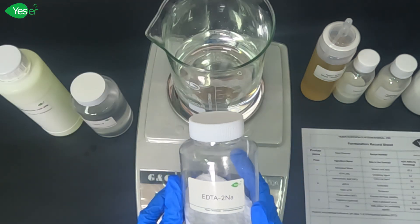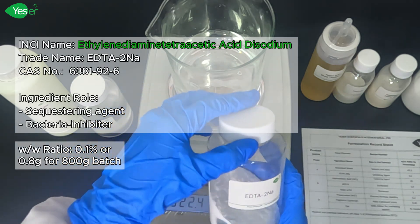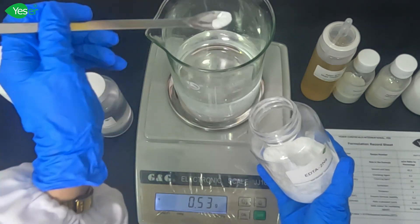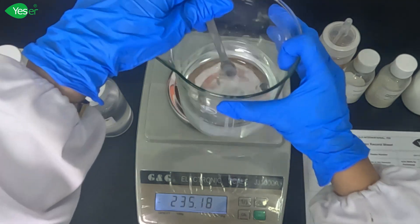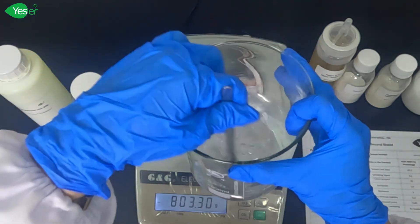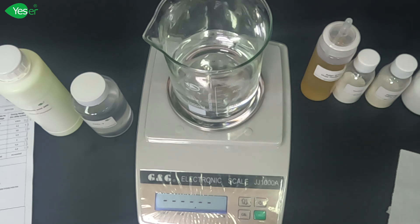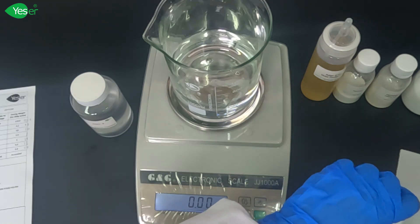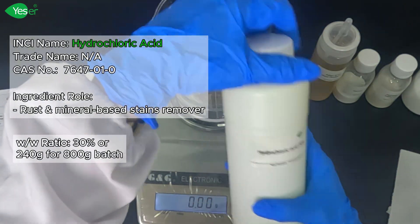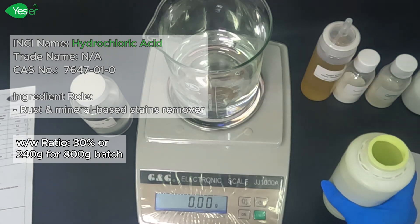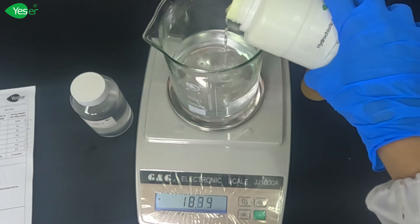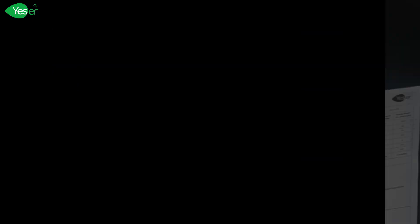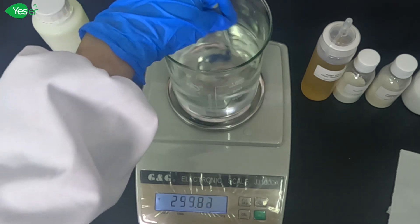Next, let's add our EDTA disodium, our chelating agent. Weigh about 0.8 grams or 0.1% for the formula. After our chelating agent, we will add our hydrochloric acid or HCl. Carefully weigh about 240 grams of HCl in our formula. Mix this carefully until fully incorporated.